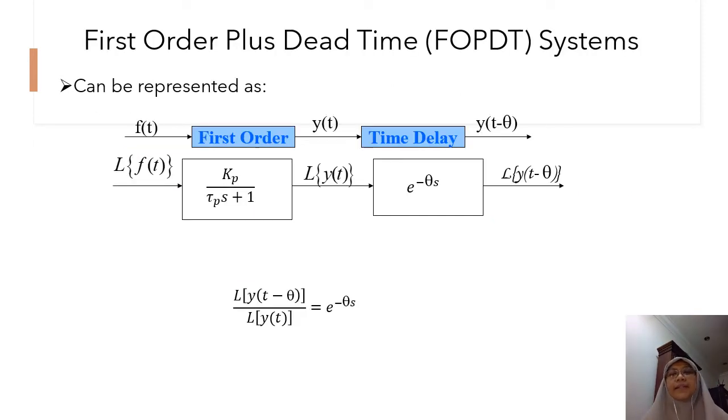For a first order plus dead time system, in actual fact, in the real world, it will be represented as one. But just to imagine it easier in terms of calculating a first order plus dead time systems, you can imagine as if we have first a first order system, then a pure time delay. Now, if we have a step change at the input, at the output of the first order system is a first order response, and after going through the pure time delay, we will have a first order plus dead time system response.